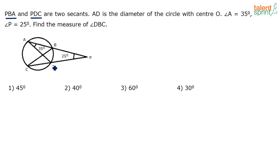AD is the diameter of the circle with center O. The center O lies on diameter AD itself. Angle A is 35 degrees, which is marked here already. Angle P is 25 degrees. We are asked to find the measure of angle DBC.